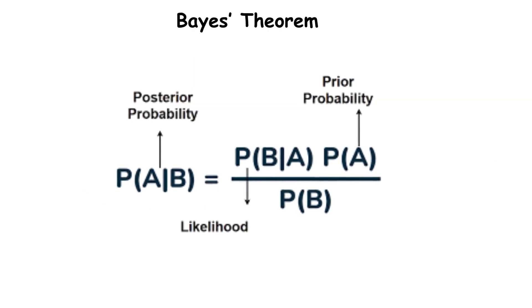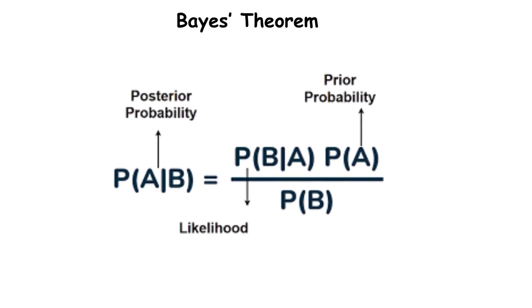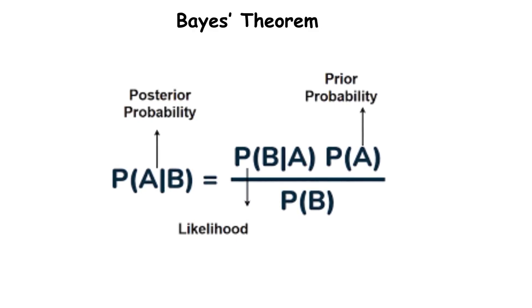The theorem combines what we already know, prior probability, with new information, likelihood, to produce an updated belief, posterior probability.